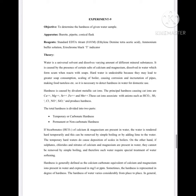Hardness is determined by the titration process. In the titration process, the titrant used is EDTA and the indicator used is Eriochrome Black T. The color change that takes place will tell you to stop the titration — the color changes from wine red to blue.